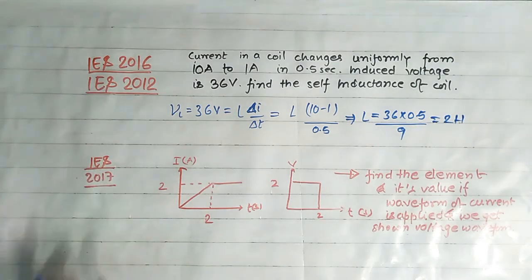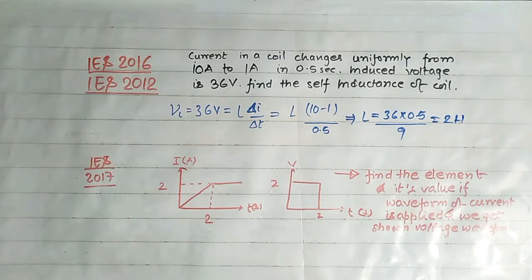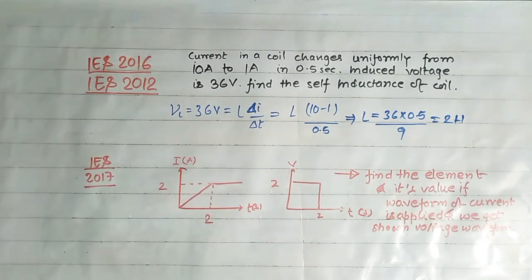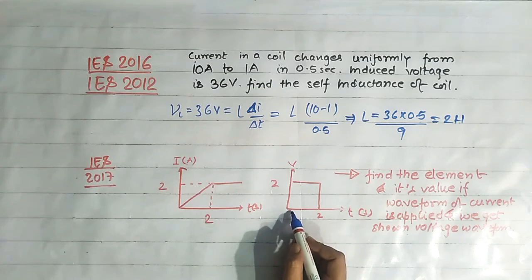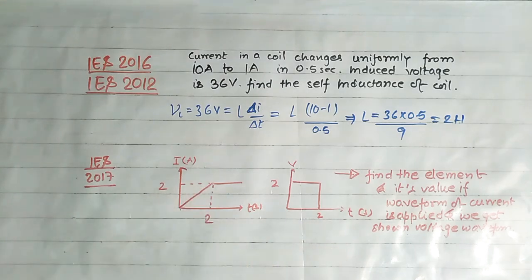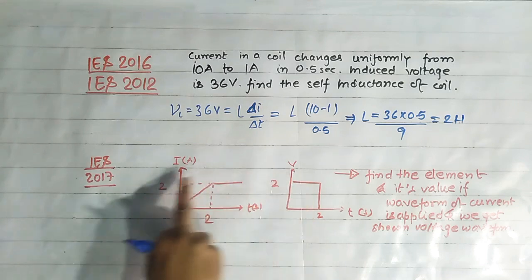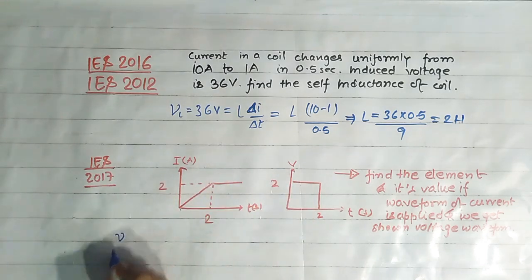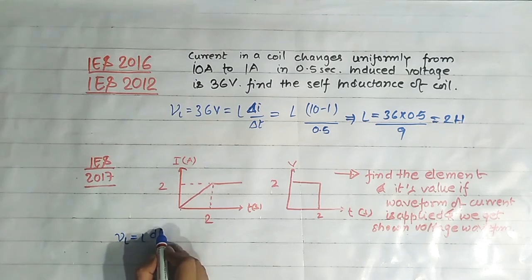This question was asked in ES 2017. A current waveform is applied to an element and a voltage waveform is obtained. We have to find the element and its value. We can clearly see that the voltage waveform is the differentiation of the current waveform — the current is linear and the voltage is constant. This is only possible for an inductor, since voltage across an inductor equals L times di/dt.